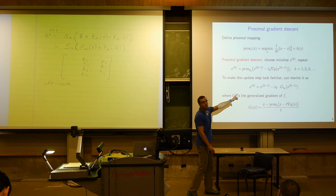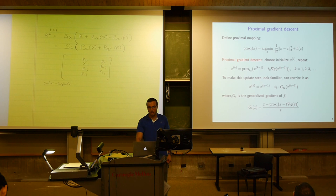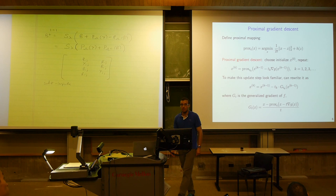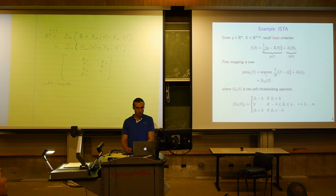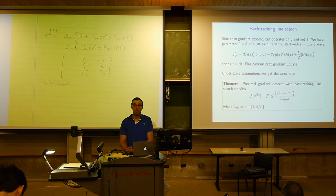Now that we've analyzed proximal gradient and backtracking for proximal gradient, we've actually redone all the work we did for gradient descent. We have strictly more, but we've reestablished those same convergence results. When h is the indicator function of a convex set C, we get projected gradient descent, because the prox operator of the indicator function is just projection onto C. And when g is 0, we get the proximal minimization algorithm.